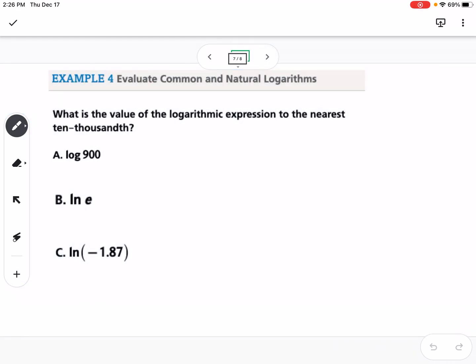Example four is what is the value of the logarithmic expression to the nearest 10,000th? These are all common log or natural log, so we can do them on the calculator. You can go to Desmos, you can go to any calculator that's a scientific calculator that has the log and natural log button on it. You would just type it in exactly like you see it, you type in log of 900, and you should get 2.9542.